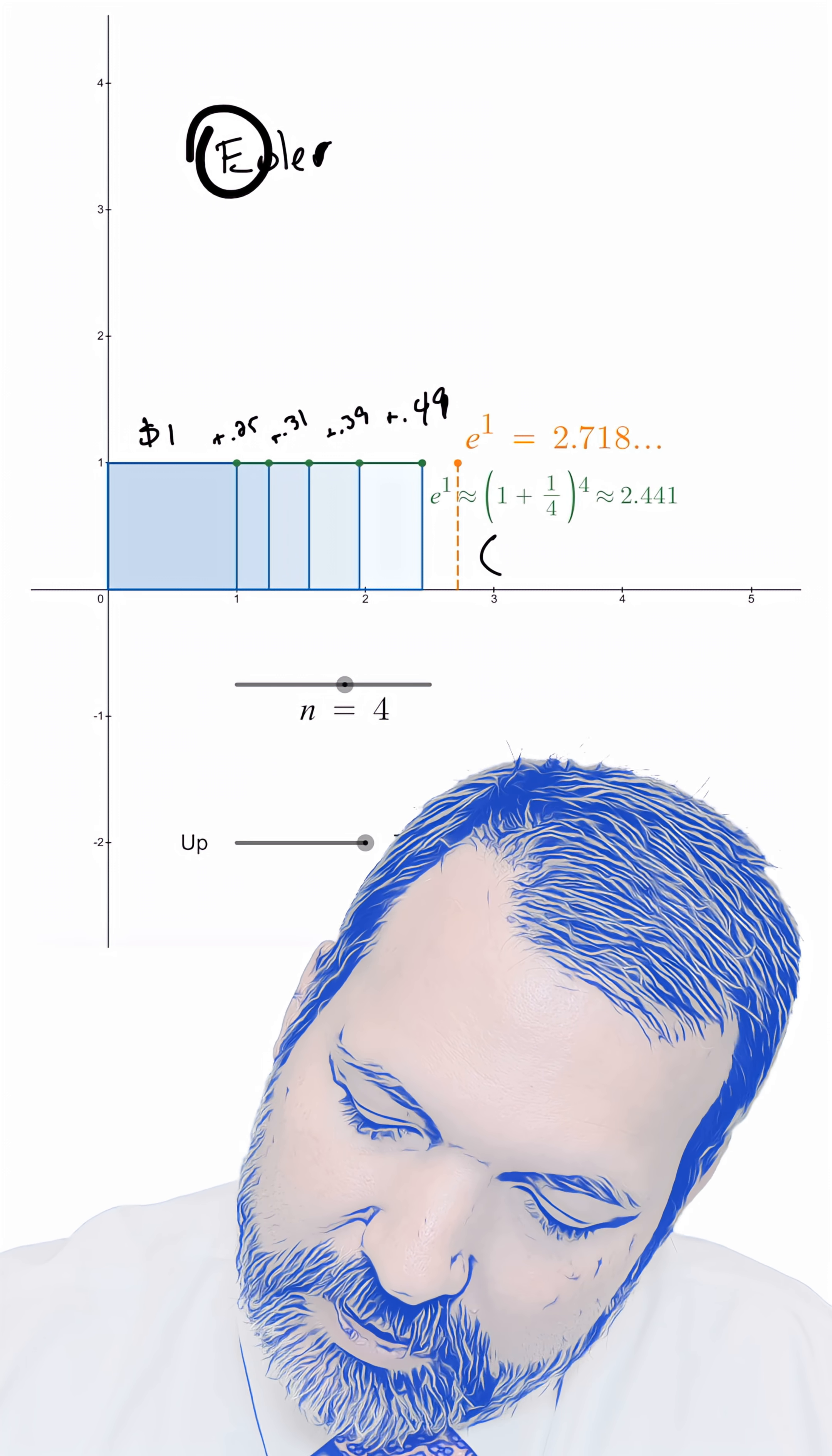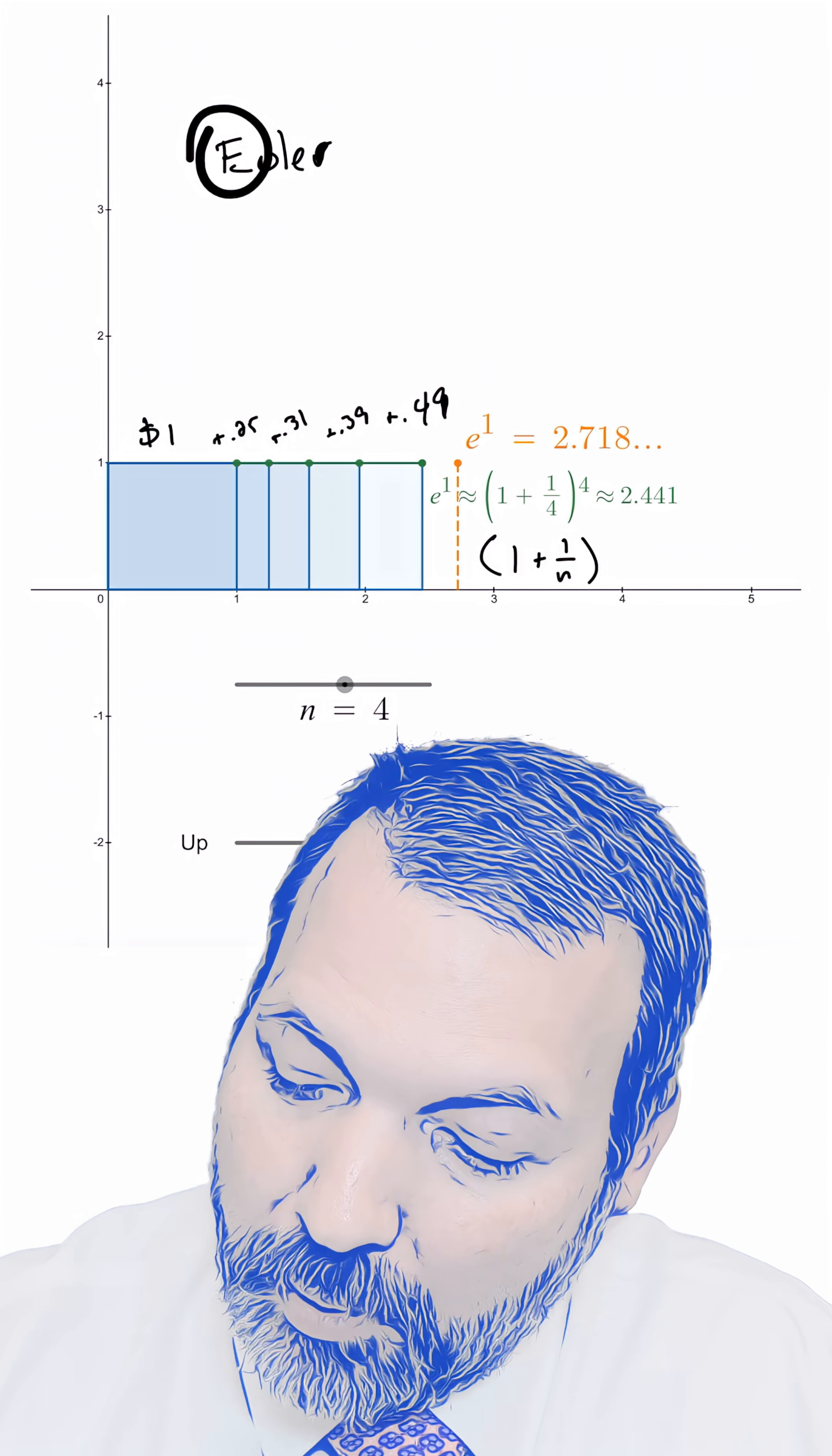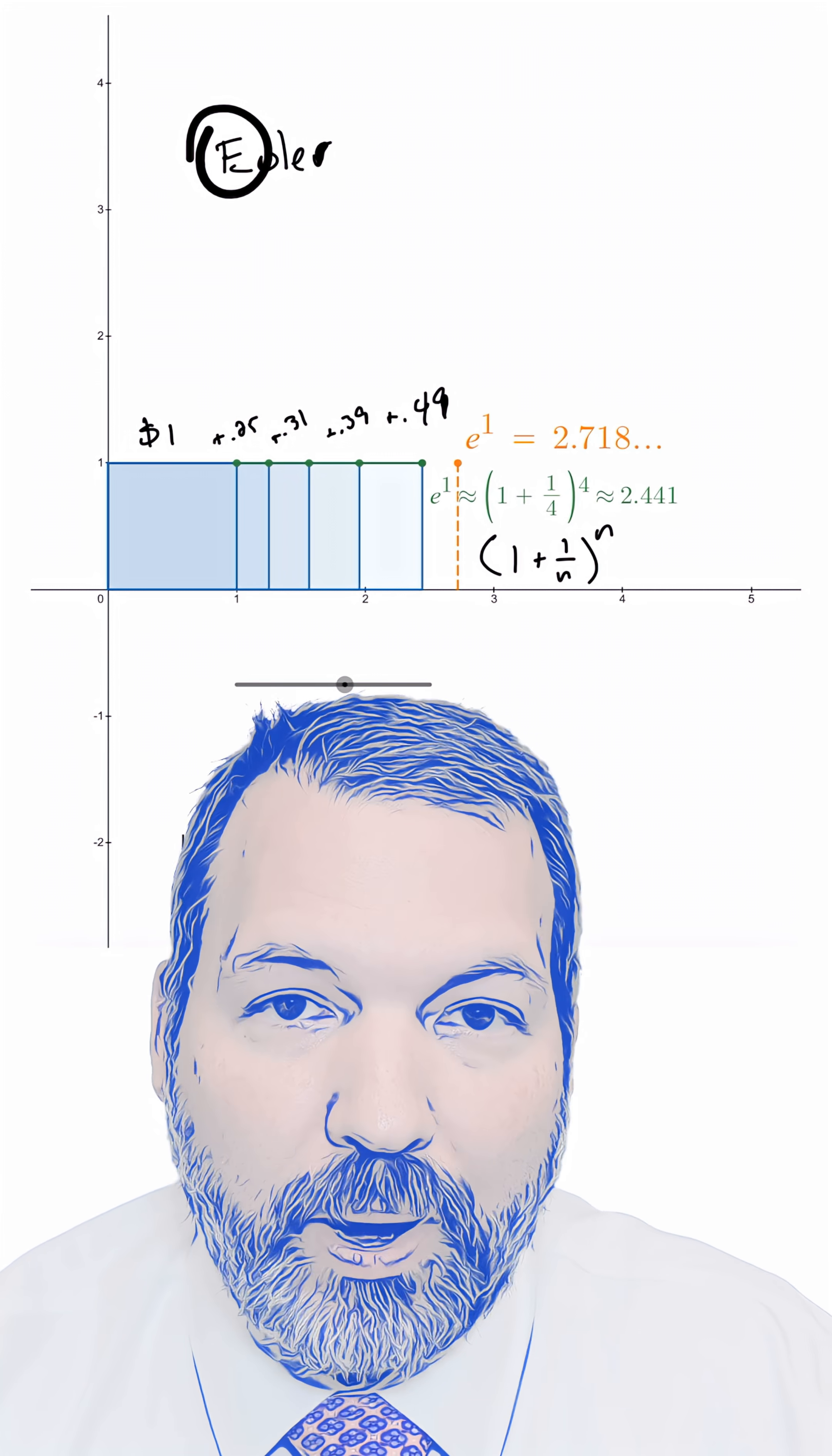Euler and many others had this idea that if we take this compounding interest throughout the year, a smaller and smaller slice of the dollar that the bank is going to give us, but we put that money back in the bank so we start earning the compound interest on that money, what we notice is that, yeah, we're going to earn more money every time, but not infinitely more money.